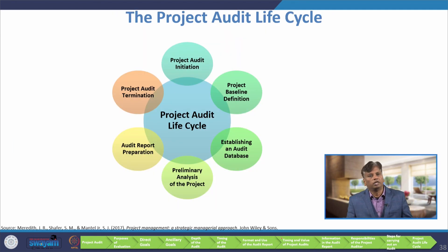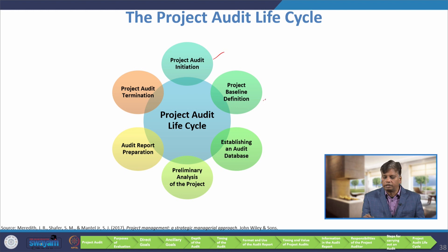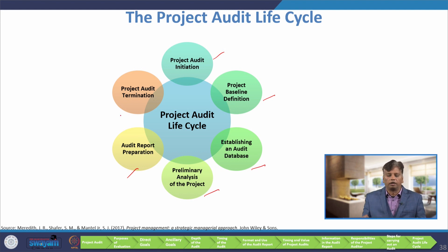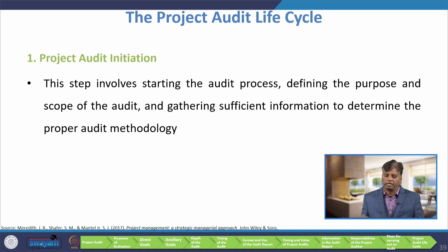Finally, we will discuss about the project audit life cycle, because the project audit is a routine activity. The stages are: project audit initiation, project baseline definition, establishing an audit database, preliminary analysis of the project, audit report preparation, and project audit termination. The first stage, project audit initiation, involves starting the audit process, defining the purpose and scope of the audit, and gathering sufficient information to determine the proper audit methodology.